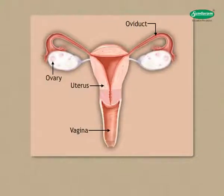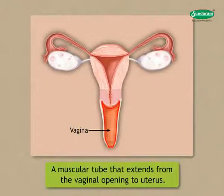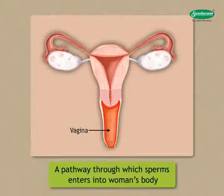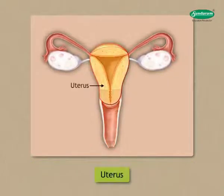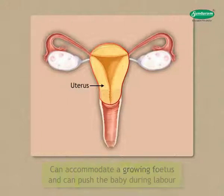The vagina, uterus, oviduct, and ovaries are the main reproductive organs of the female reproductive system. The vagina is a muscular tube that extends from the vaginal opening to the uterus. It provides the route for menstrual blood to leave the body during menstruation, a pathway through which sperm enter the woman's body, and a pathway through which a baby comes out during childbirth.